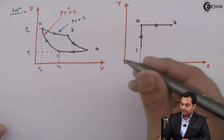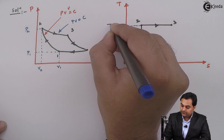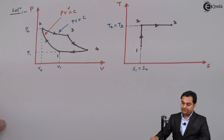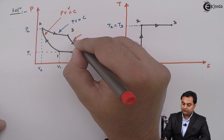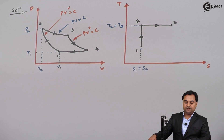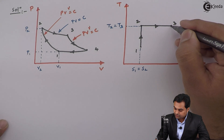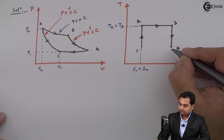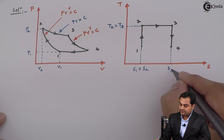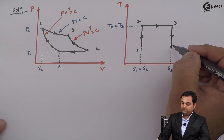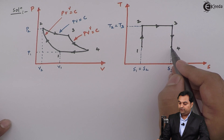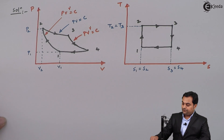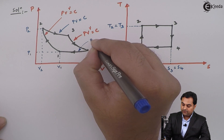Process 3 to 4 is isentropic expansion, governed by PV^γ = constant, and can again be shown by a vertical line on the TS diagram. Entropy remains constant: S3 = S4. There is a drop in temperature from point 3 to point 4. Process 4 to 1 is isothermal heat rejection at constant temperature, following PV = constant.